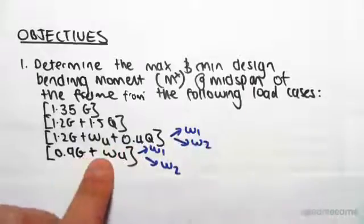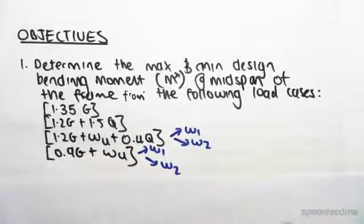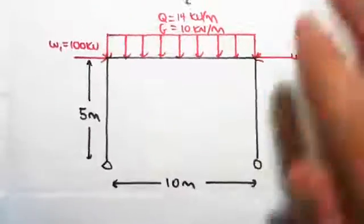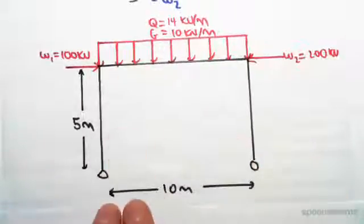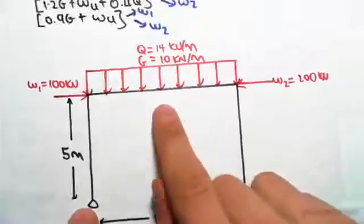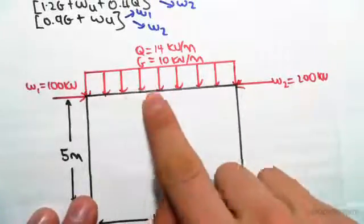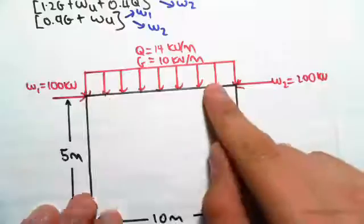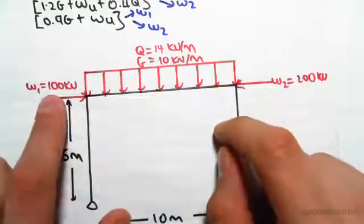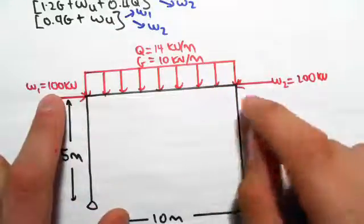So here's our frame. It's 5 meters by 10 meters. We have a dead load of 10 kilonewtons per meter, a live load of 14 kilonewtons per meter, wind on the left at 100 kilonewtons, and wind on the right at 200 kilonewtons.